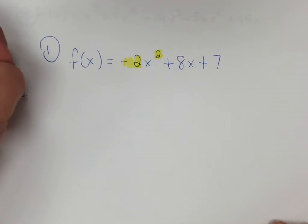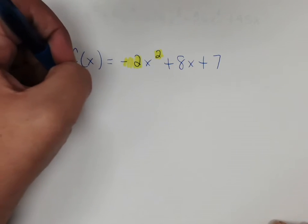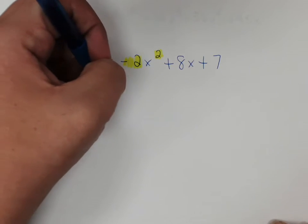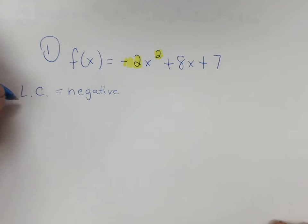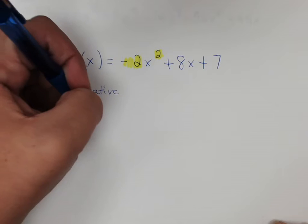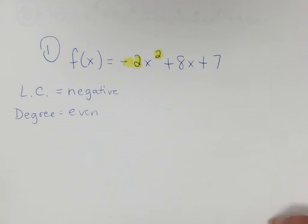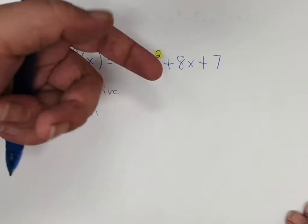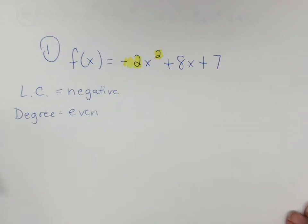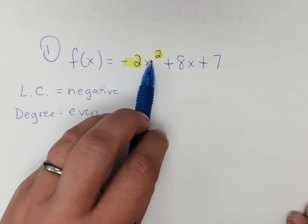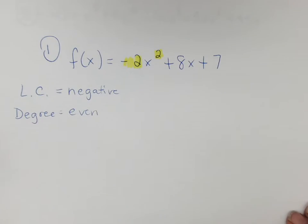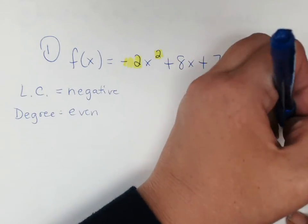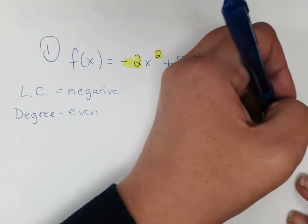So my leading coefficient is negative. And my degree is even. So if we recall from my notes, then if I've got negative, this is going to be going down on the right hand side. And since it's an even function, it's going to be symmetric. So this graph looks something kind of like this.